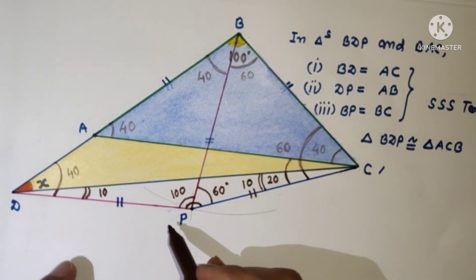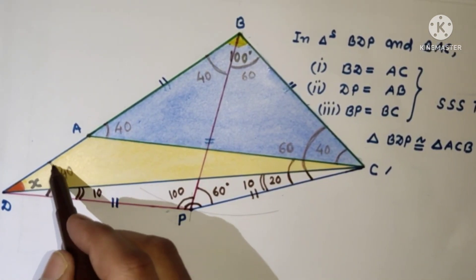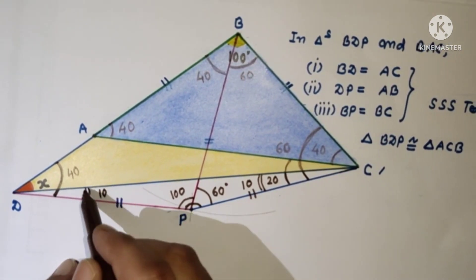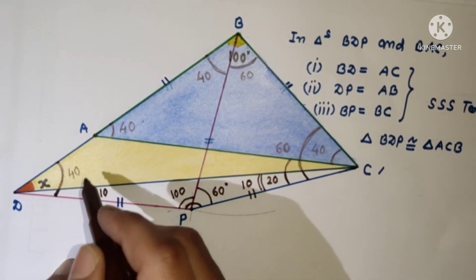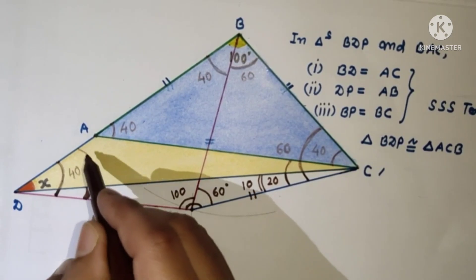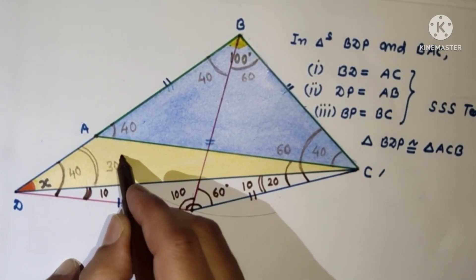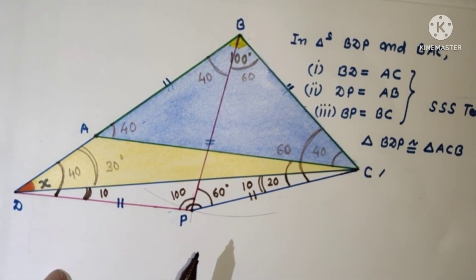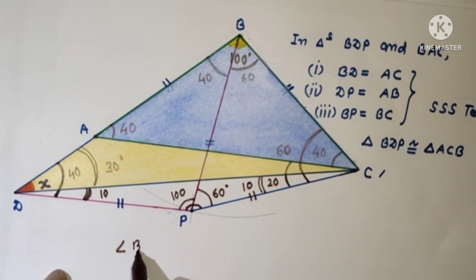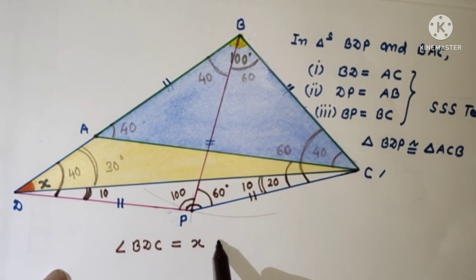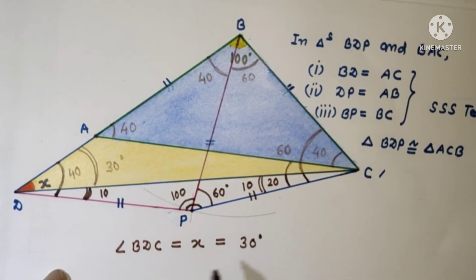This angle is 40 and this is 10, so this remaining part will be 40 minus 10 which is 30 degrees. Therefore the value of angle BDC, which is X, is equal to 30 degrees. This is the required answer.